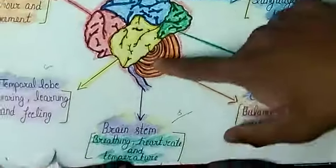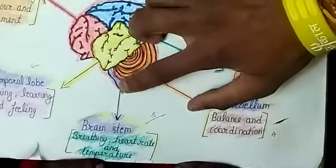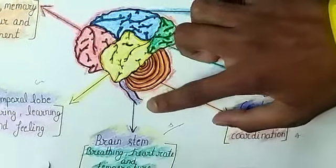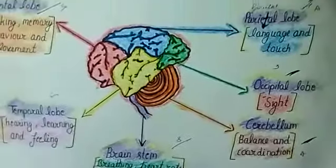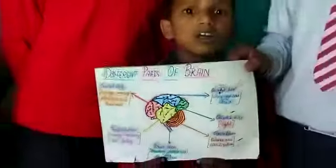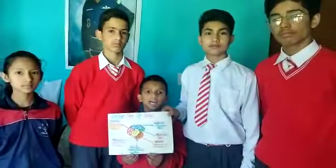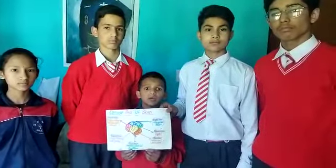The sixth part of the brain is called the brainstem, and its functions are breathing, heart rate, and temperature. Thank you dear friends for your kind attention. May you live long.